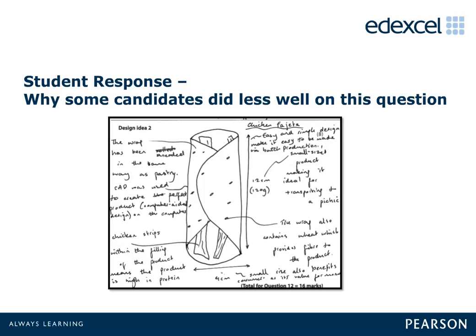5. High in fibre: well answered with wholemeal flour or baked beans being the most popular answers. A few candidates put down meat and fish as including fibre. 6. Easy to transport for a picnic: good responses for this, with most candidates including dimensions or referring to the size of the product with weight, style and shapes. 7. Value for money: this was not answered well by candidates. The most common answer was local, buy one get one free, BOGOF — disappointing responses.